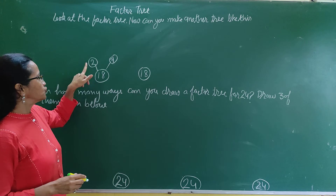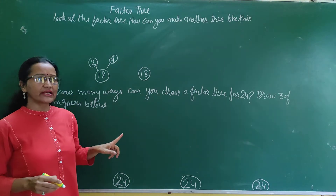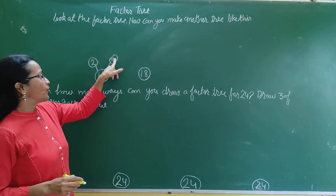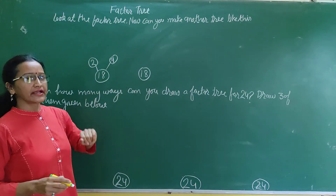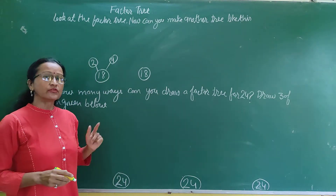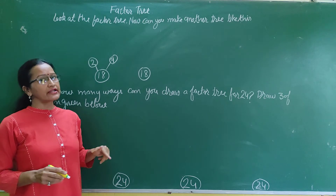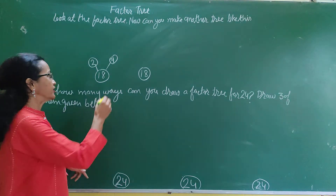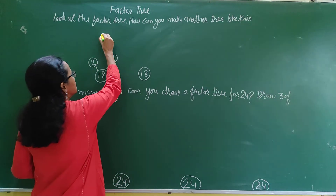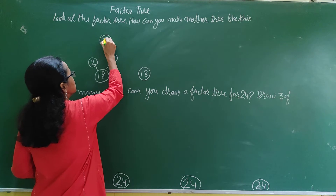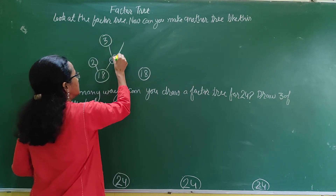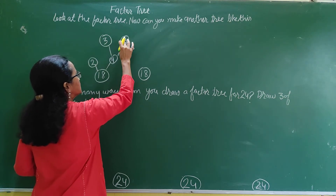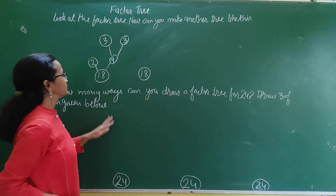Now we cannot break 2. Now break 9. In which table does 9 come? 3 threes are 9. So right here we write 3 and 3. 3 threes are 9.